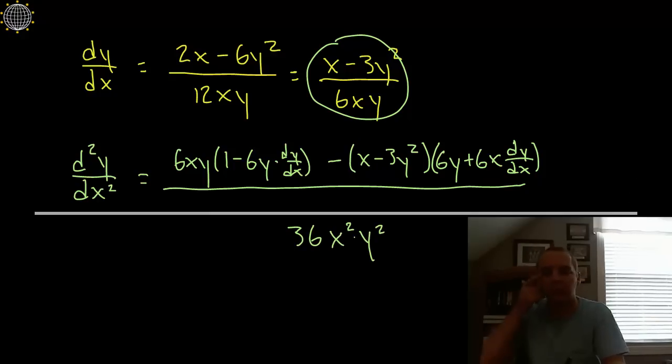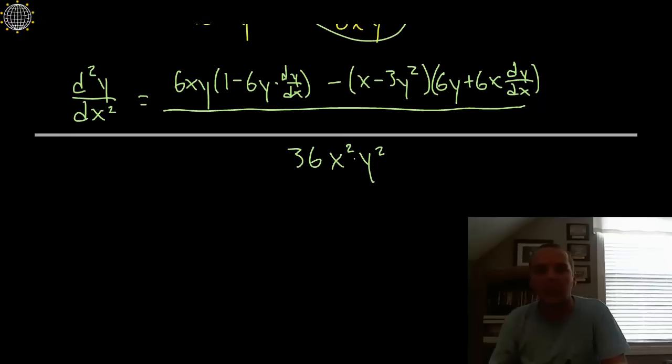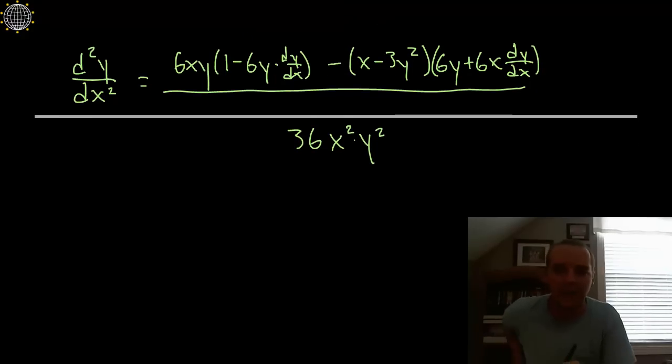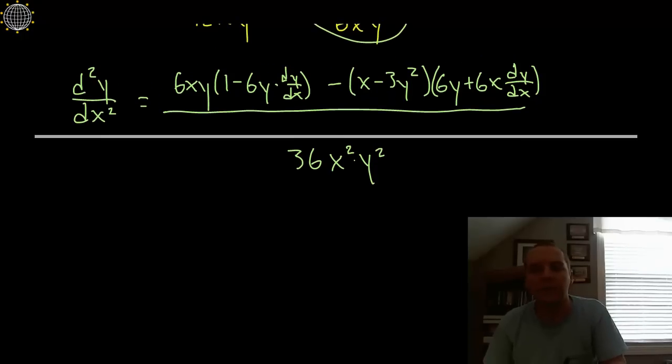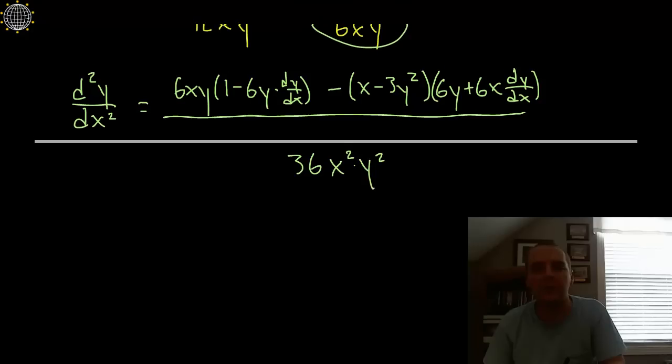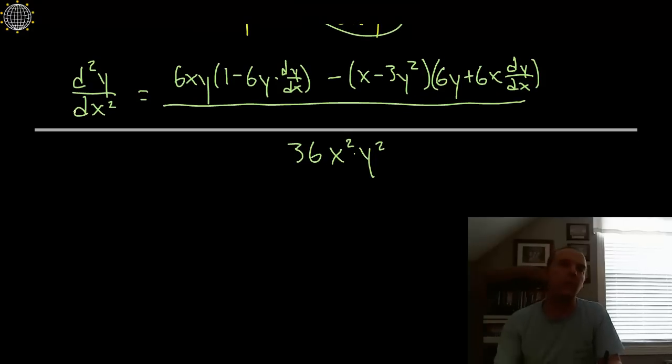And this is kind of sort of your answer. Kind of sort of. Now why do I say kind of sort of? Well, here's the oversight that a lot of students miss. Let's say you wanted to find the second derivative at a given point, you know, the point (2, 7) or something like that. How would we evaluate it?